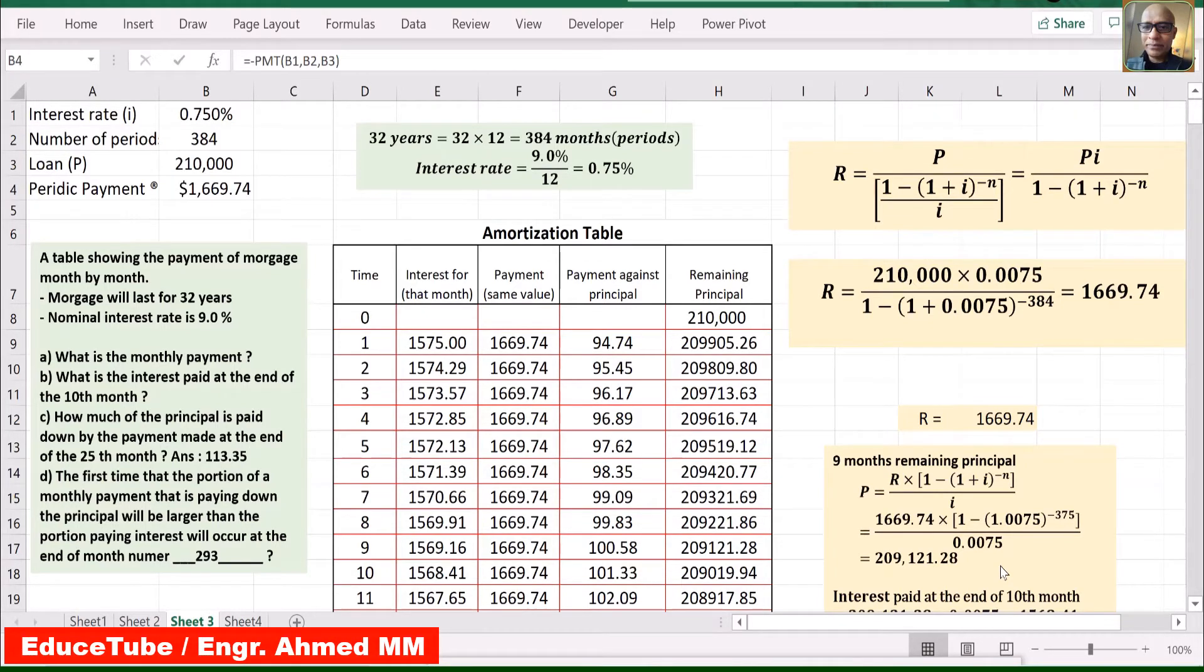Hi everybody. Today I am going to discuss amortization. In this Excel sheet, we shall learn how to make an amortization table or schedule like this one. A loan is amortized if both the principal and interest are paid by a sequence of equal periodic payments. This is a very important point to understand about amortizations.